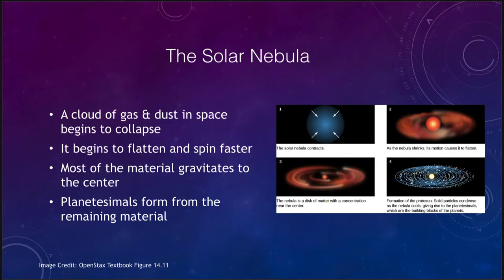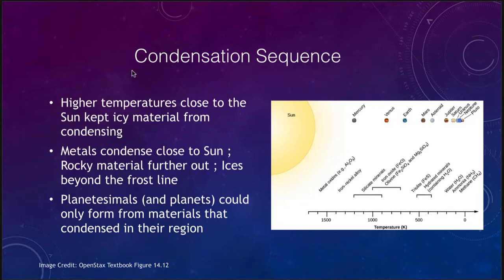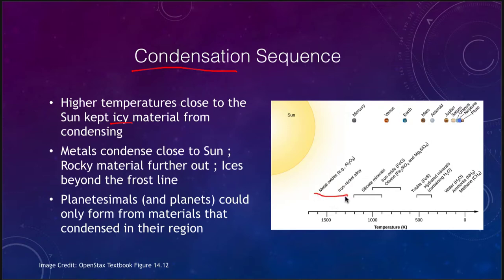How do we know what types of planets are going to form? We look at what we call the condensation sequence, which says essentially that the higher temperatures closer to the Sun kept icy material from condensing. That's why we don't have lots of ices on Mercury, Venus, Earth, and Mars — they were too close to the Sun and those materials stayed in a gaseous or vapor state. At various temperatures, the sequence tells you what types of materials are able to condense: close to the Sun you get metallic materials, further away rocky materials, and even further away you start to get ices out in the depths of the solar system.